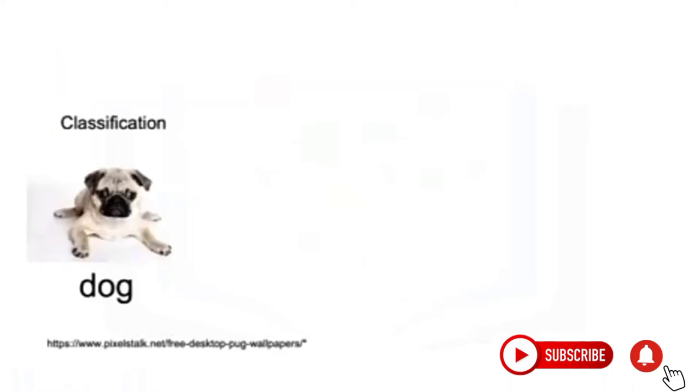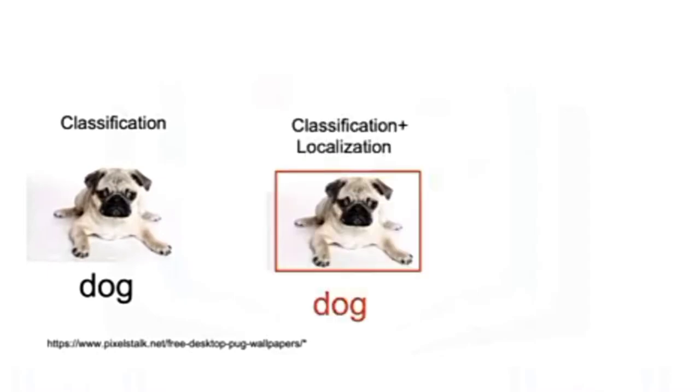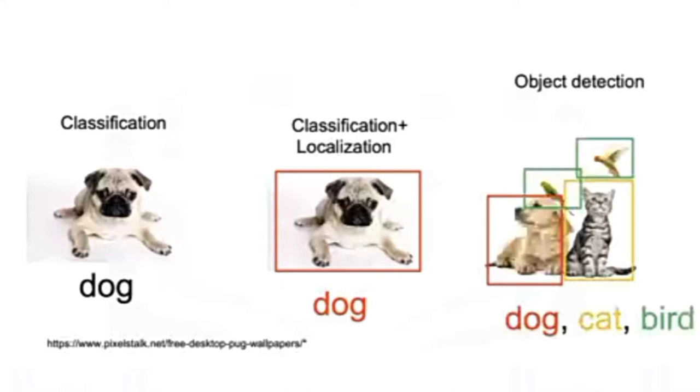Image classification predicts the class of an object in an image. Classification and object localization locate the presence of an object and indicate the location with a bounding box. Object detection locates multiple objects with a bounding box and their classes.